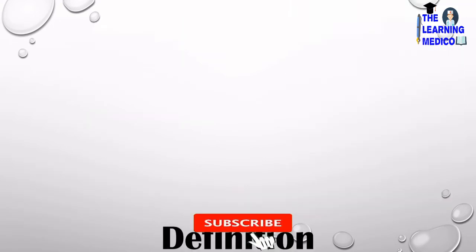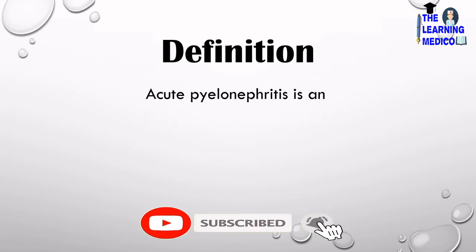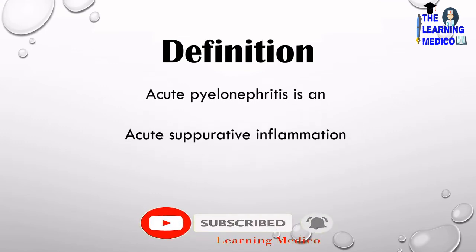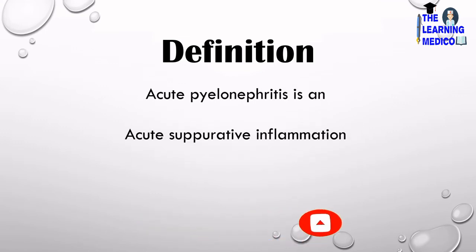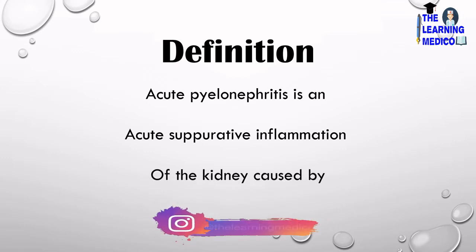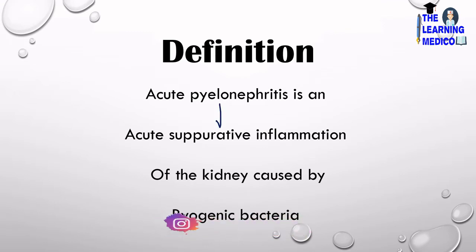So let's start. Definition: acute pyelonephritis is defined as a condition of acute suppurative inflammation of the kidneys caused by pyogenic bacteria. Acute pyelonephritis is related to renal kidneys.